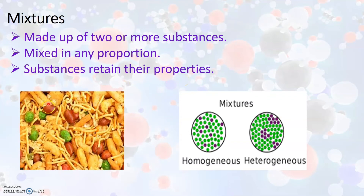Let's take an example of a mixture. As you can see in the picture, these are substances mixed together in any proportion, and each substance retains its properties. Take the example of groundnut — when groundnut is mixed with other substances, it is not going to change its property, meaning it is not going to change its taste. Each of these substances retains its original property.